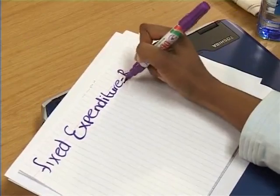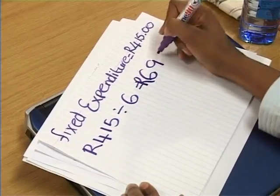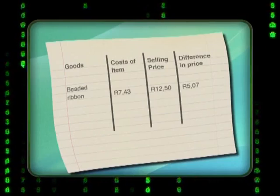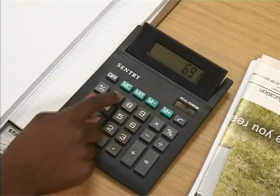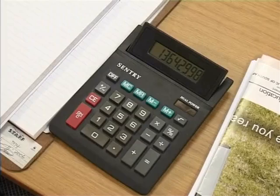Remember, the markup is there to pay for all Madi's fixed expenses. You've allocated an equal part of the fixed expenditure of 415 rands to each of the six items. This means that you have to make up 69 rands and 17 cents from the difference in cost and the final selling price before the break-even point is reached. Can you use the data in this table to confirm the break-even targets you found on your graphs? I'll use my calculator, starting with the ribbons. Part of the fixed expenditure of 69 rand and 17 cents is paid each time Madi sells a ribbon. That's 5 rand and 7 cents per sale. To calculate the number of ribbons Madi has to sell, I'll divide 69 rand and 17 cents by 5 rand and 7 cents. I get 13.642. This means that Madi will only reach her break-even point if she sells 14 ribbons.